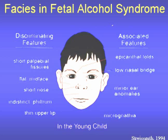It must be stressed that the facial characteristics basically define FAS. Without these facial features, one cannot be diagnosed with FAS. In particular, the discriminating features are short palpebral fissures — that is, the length of the eye opening — a flat midface, an indistinct or flat philtrum, which is the ridge under the nose, and a thin upper vermilion, that is, the upper lip.